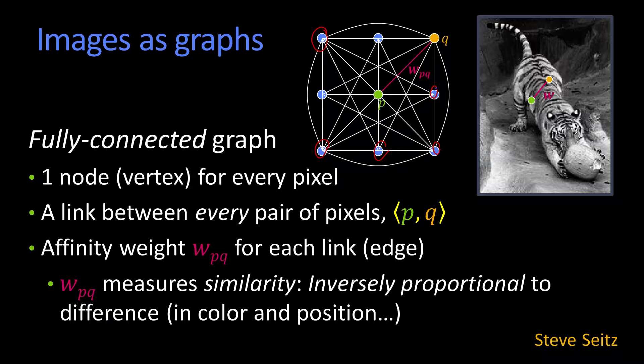And between every pair of pixels is a link. Just as in any other graph, those are the edges of our graph. And on each edge, there's what's referred to as an affinity weight, or just a weight. And here that's written as WPQ. And the idea is that I'm going to need an edge for any weight that is non-zero.